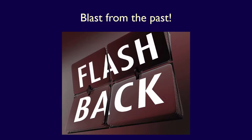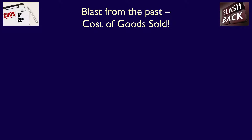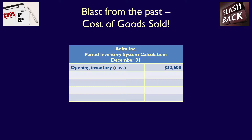How does the retail inventory method work? Before we move forward, we need to recall two concepts from introductory financial accounting. The first thing we have to recall is how we calculate cost of goods sold in a periodic inventory system. We'll use an example, Anita Inc., to demonstrate this concept. At the start of the year, Anita Inc. has opening inventory at cost of $32,600.